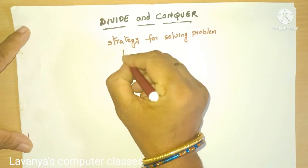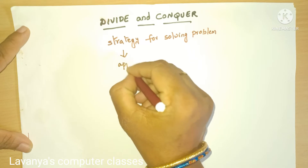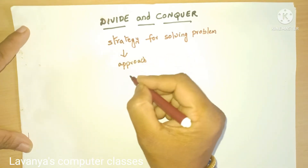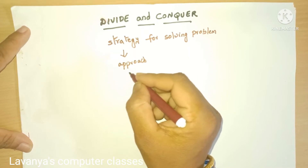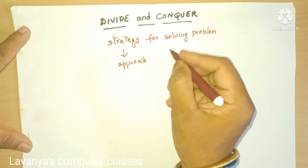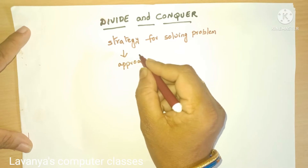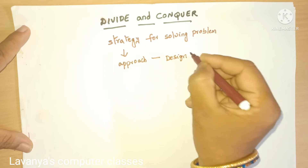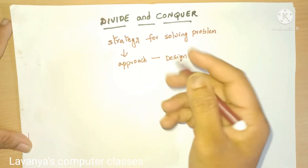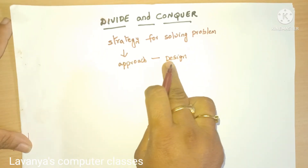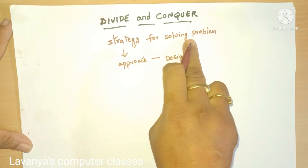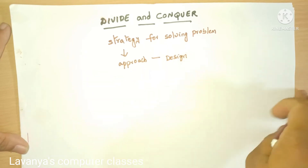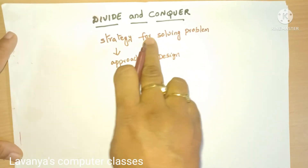What is the meaning of strategy? It means an approach — how to solve a problem, what method or type of approach you are taking, what steps you are taking for solving a problem. That is known as strategy or design: selecting some approach or designing how to solve a problem.